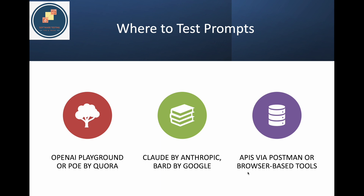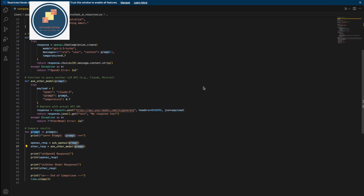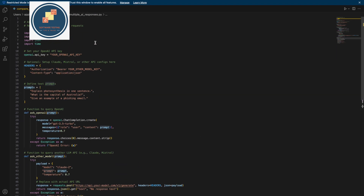For automation testing, you can use APIs via Postman or browser-based tools to hit the API and get the response. For automated prompt testing, use Python plus the OpenAI API — or whatever tool you want to test, use their API — to run prompts programmatically. You can track output changes, check the response, and compare responses across models. I have written one script for this.